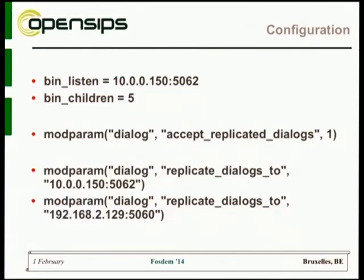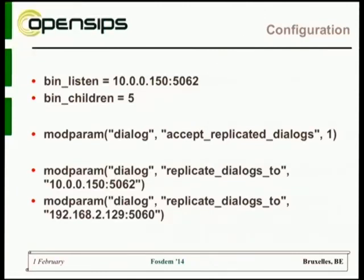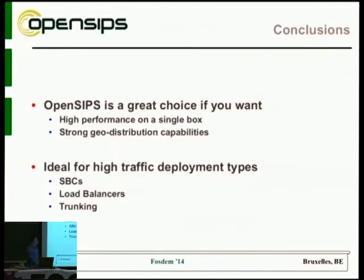Configuration is fairly simple. You tell OpenSIPS which interface to listen on and tell it to accept replicated dialogues from other IPs — you'll need to IP-table that first IP to prevent attacks. Then you tell the current OpenSIPS instance where to replicate the dialogues it is processing. You can set this last parameter multiple times depending on your scenario. For an active-active deployment, you tell each OpenSIPS to replicate information to each other. Or if you have two actives and one backup, you can do that too. So things are kept perfectly in sync, and you can use this to replicate basically anything.